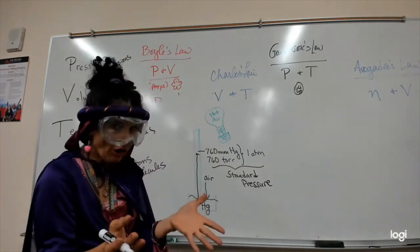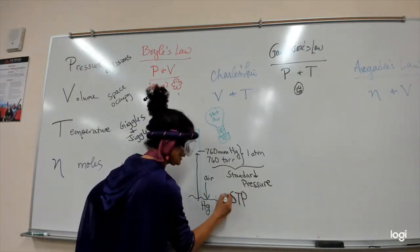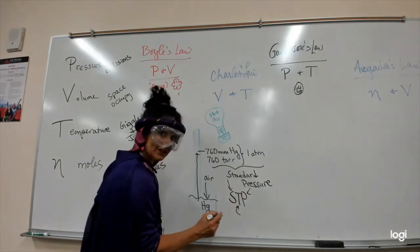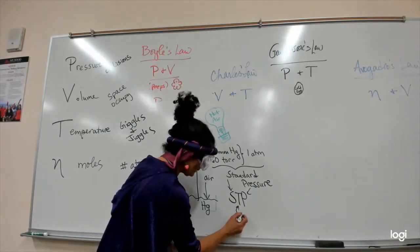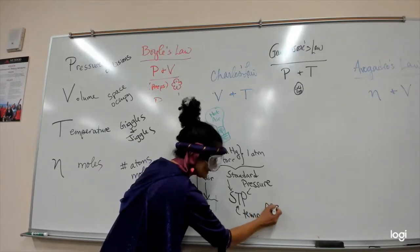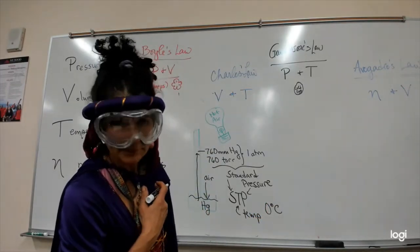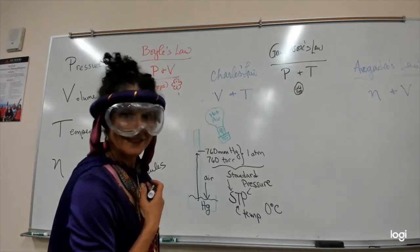There is also something that you'll notice in your notes. It says STP. S is standard, P is pressure, and temperature. Giggles and jiggles is the T. Standard temperature is zero Celsius. It's really warm in here. This is the fifth time I've done this because none of my demos are working. I'm a little crushed.